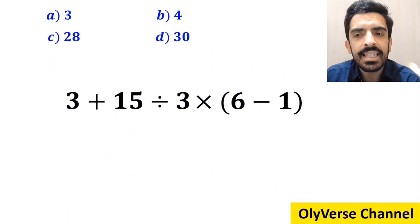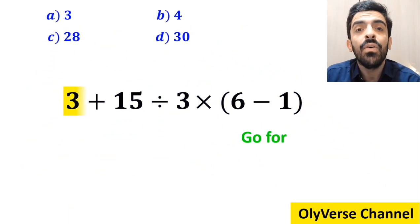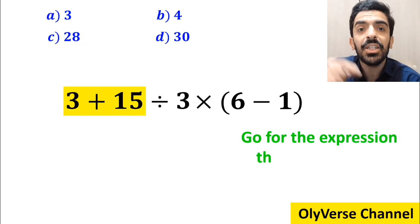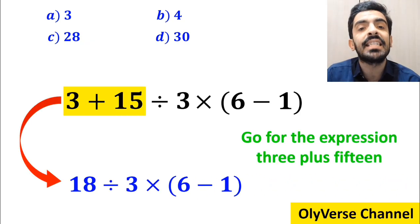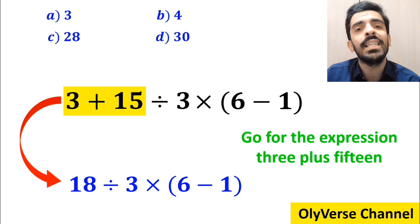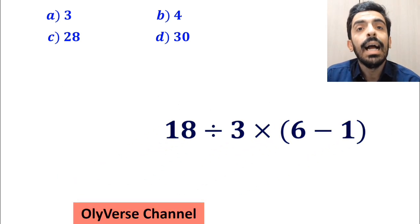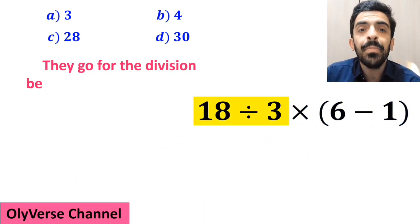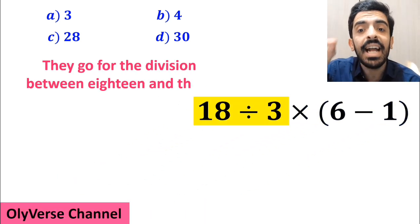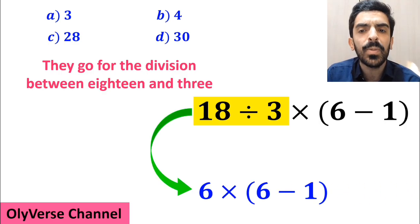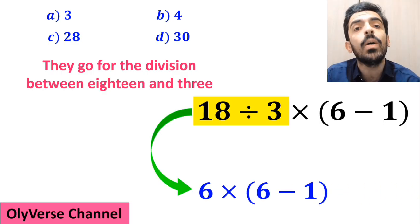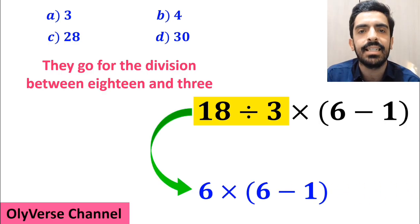Many people, when solving this question, first go for the expression 3 plus 15 and rewrite this expression as 18 divided by 3 times 6 minus 1 inside the parenthesis. In the next step they go for the division between 18 and 3, and this expression simplifies to 6 multiplied by 6 minus 1 inside the parenthesis.